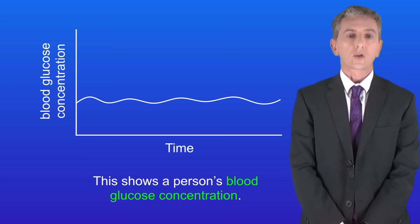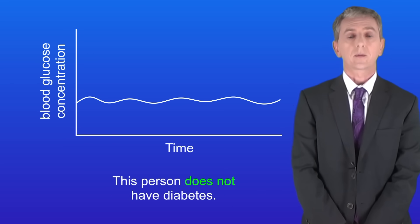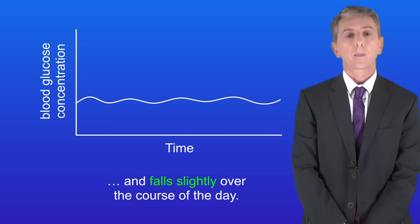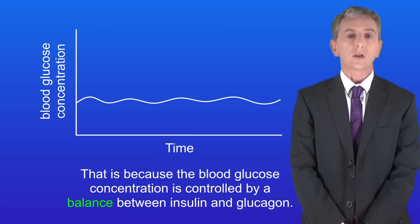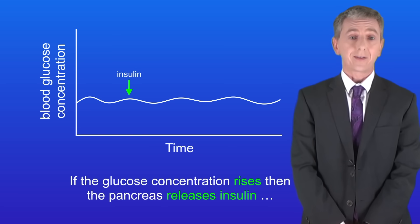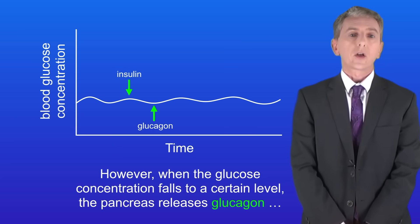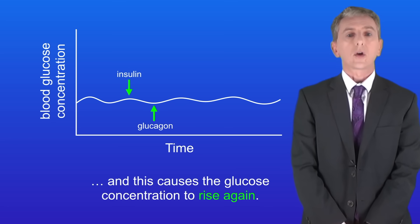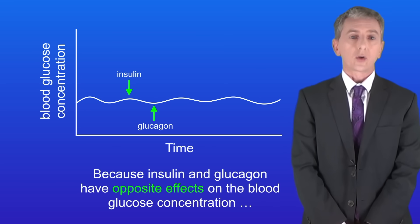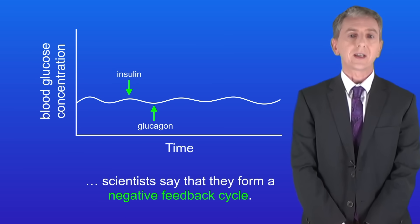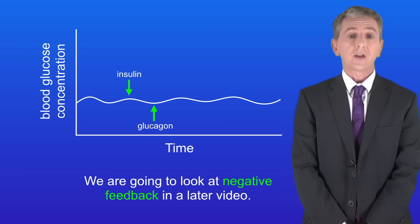Here is a graph showing a person's blood glucose concentration over the course of the day — this person does not have diabetes. As you can see the blood glucose concentration rises slightly and falls slightly, because it is controlled by a balance between insulin and glucagon. If the glucose concentration rises then the pancreas releases insulin, causing the glucose concentration to fall. When the glucose concentration falls to a certain level the pancreas releases glucagon, causing the glucose concentration to rise again. Because insulin and glucagon have opposite effects on the blood glucose concentration, scientists say that they form a negative feedback cycle.